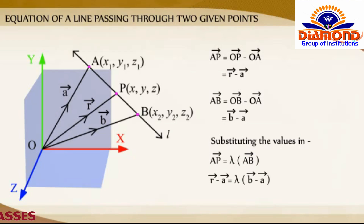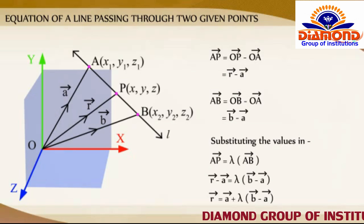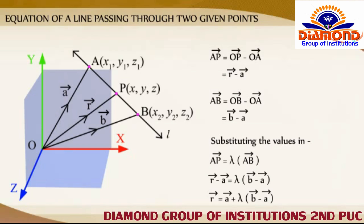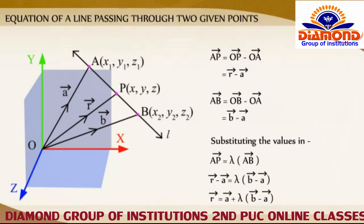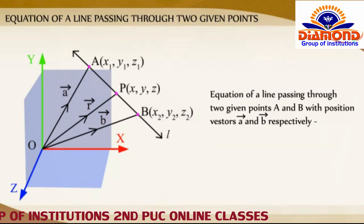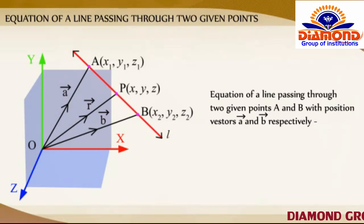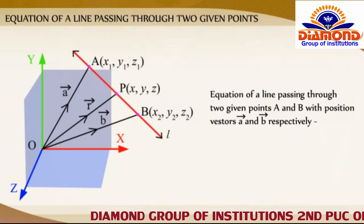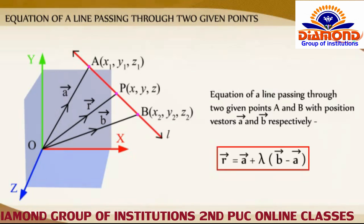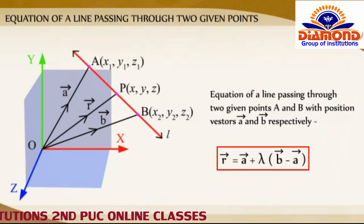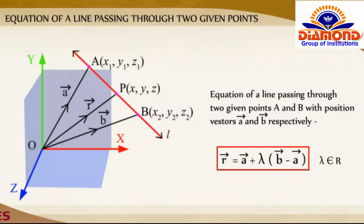That is, vector R is equal to vector A plus lambda times (vector B minus vector A). Therefore, the equation of a straight line passing through two given points A and B with position vectors A and B respectively is: vector R equals vector A plus lambda times (vector B minus vector A), for some lambda belonging to R.